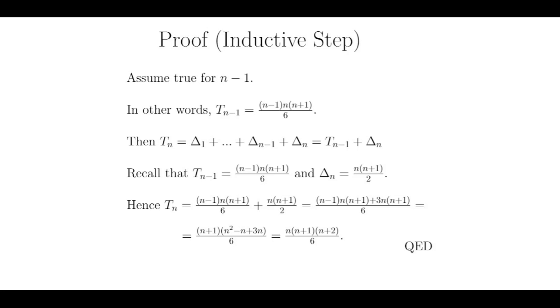plus delta n minus 1 plus delta n. But notice this is equal to t sub n minus 1 plus delta n. And we assume the formula holds true for n minus 1. So this is equal to n minus 1 times n times n plus 1 all divided by 6 plus delta n.